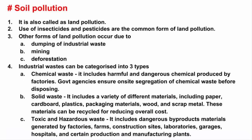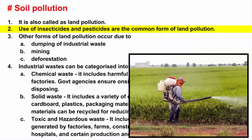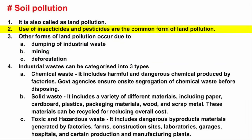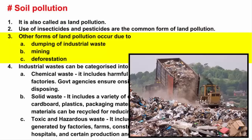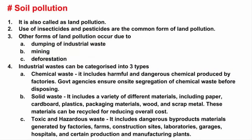The third one is soil pollution, also called land pollution. The most common form of land pollutant is the use of insecticides and pesticides. Overuse of these chemicals can lead to exhaustion of nitrogen compounds from the soil, making it unfit for plants to grow. Other forms of land pollution occur due to dumping of industrial waste, mining, and deforestation. Industrial waste can be categorized into three types: chemical waste, solid waste, and toxic and hazardous waste.